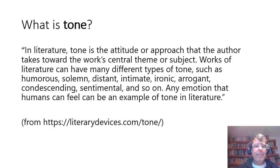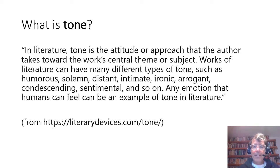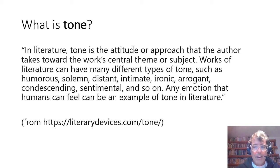What is tone? In literature, tone is the attitude or approach that the author takes toward the work's central theme or subject. Works of literature can have many different types of tone, such as humorous, solemn, distant, intimate, ironic, arrogant, condescending, sentimental, and so on. Any emotion that humans can feel can be an example of tone in literature. One way of thinking about tone is that it's the mood or feeling of something.